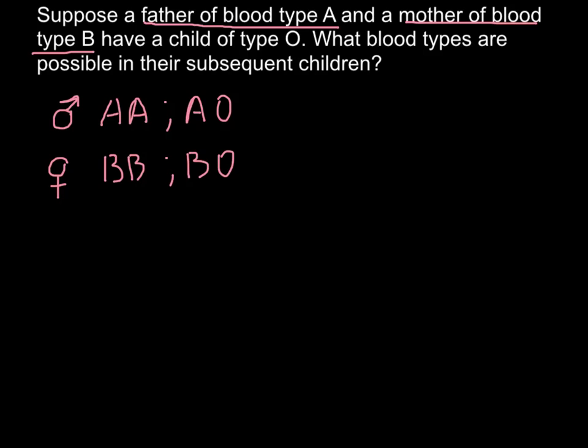Now let's consider which genotypes can produce phenotype O for the child. And this phenotype, that is O, can be produced by only one genotype, that is OO.